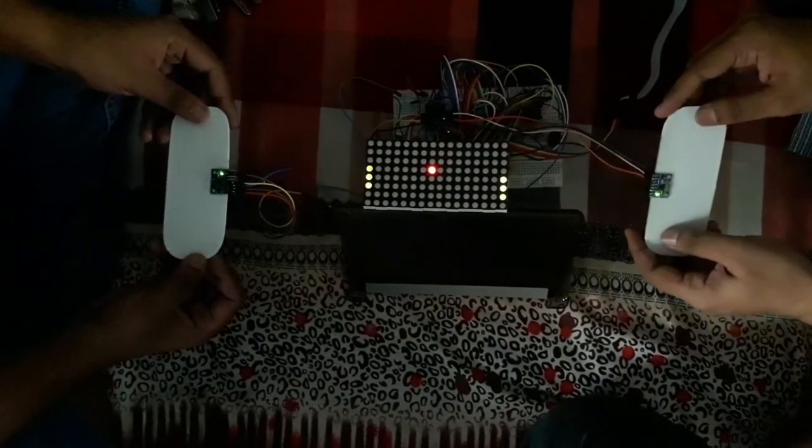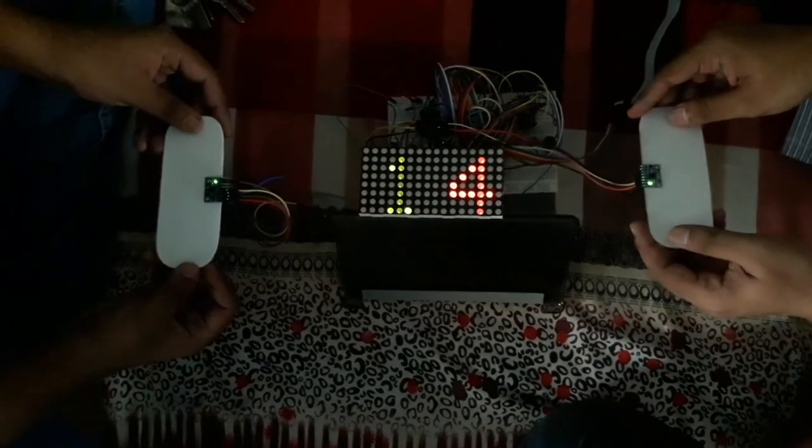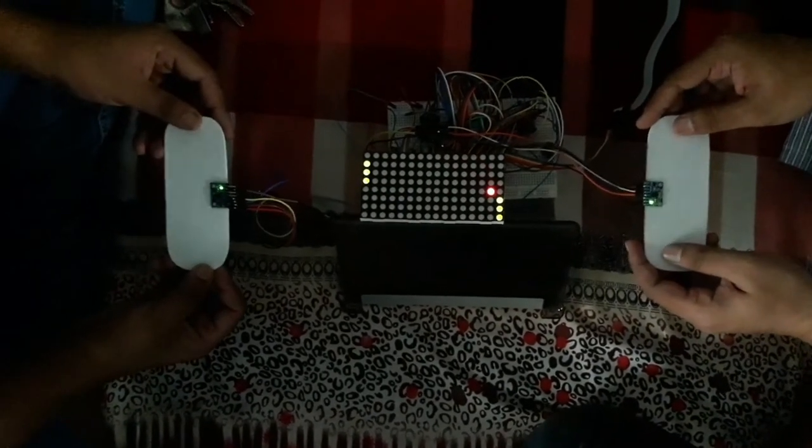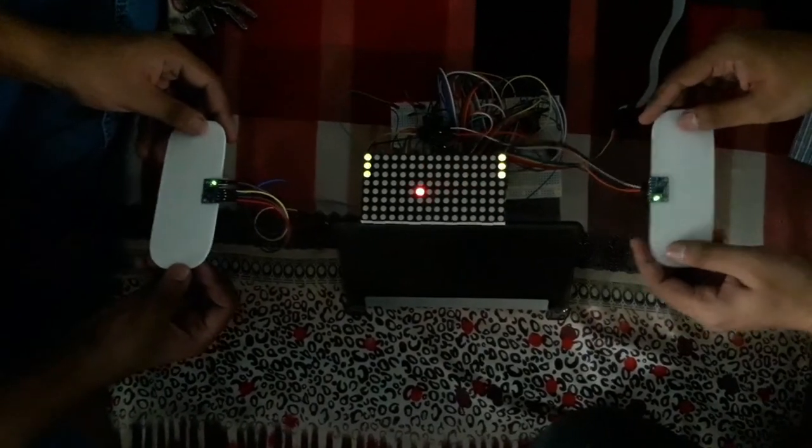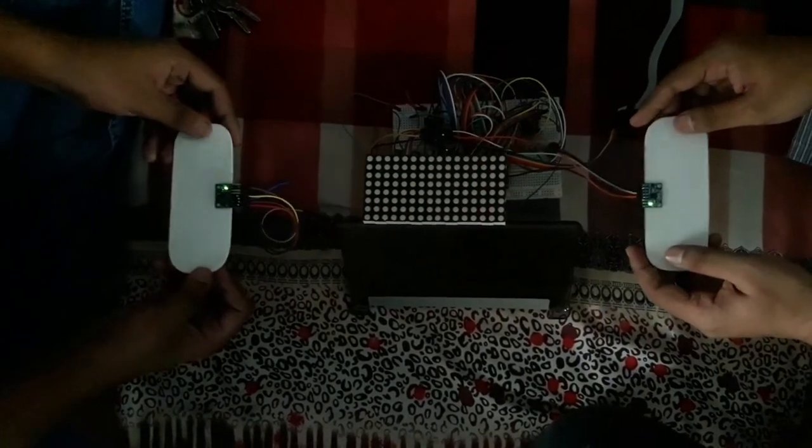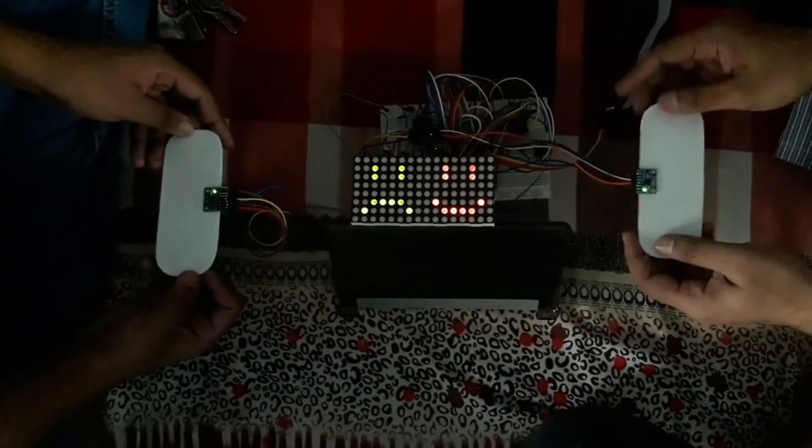Player one scores. If player one misses, player two wins. Player one comes back, player one comes back. Okay, 5-2. Here is the smiley.